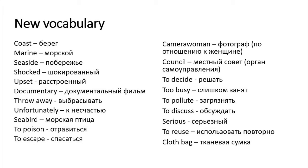To poison — отравить; poison может быть существительным (яд) а также глаголом to poison — отравить. To escape — спасаться. Camera woman — фотограф, но именно по отношению к женщине; в английском языке существует разделение по половому признаку: если это мужчина — camera man, если женщина — camera woman.